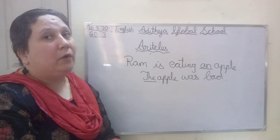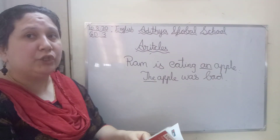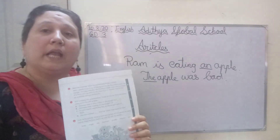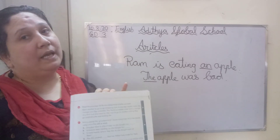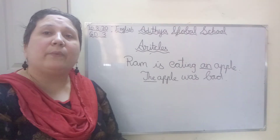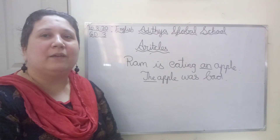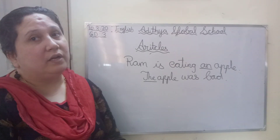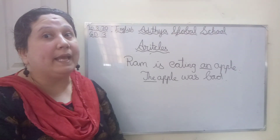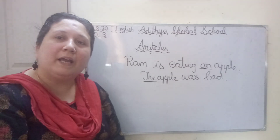I hope you understood what articles are. Please complete page number 23 in your grammar workbook, take a picture and send it to ma'am before 7pm in the evening. Start studying, don't waste your time. Start revising all your lessons. You should all get good marks in all your exams and tests. Prepare well. And coming to your GK question: the name of a baby kangaroo is called — find the answer and tell ma'am in the next class. Bye, take care, students.